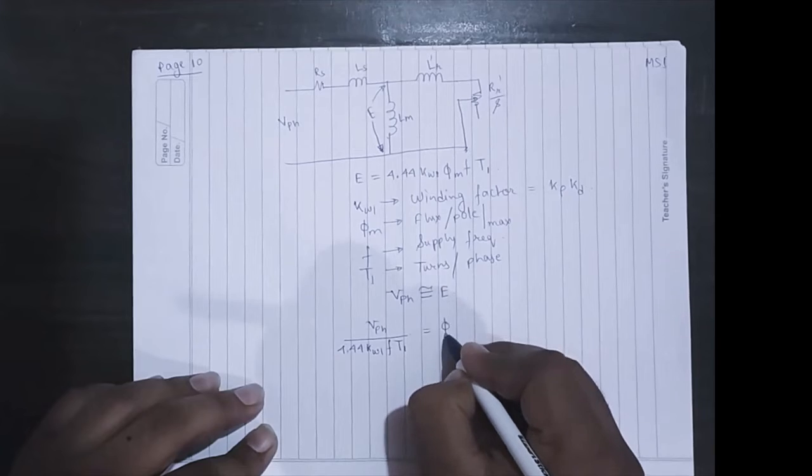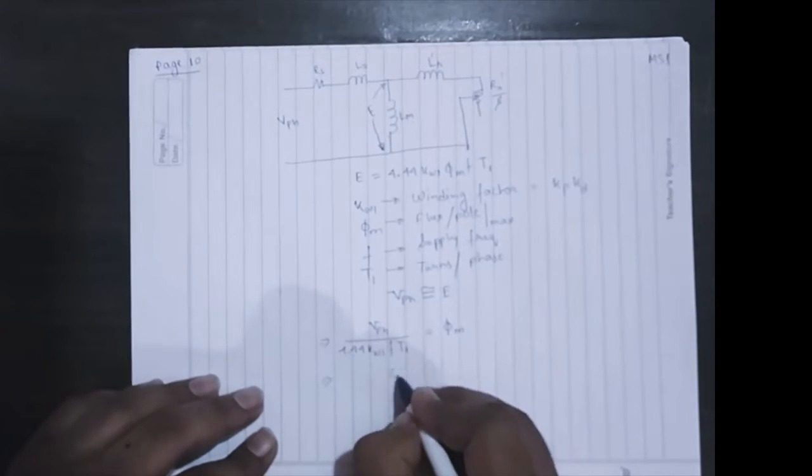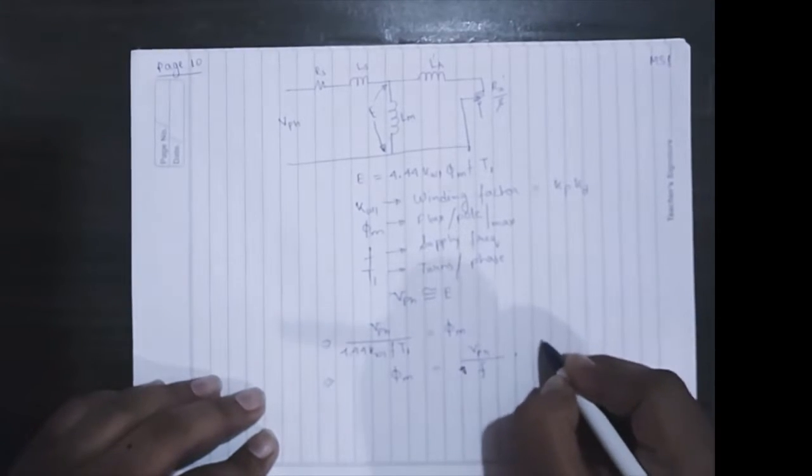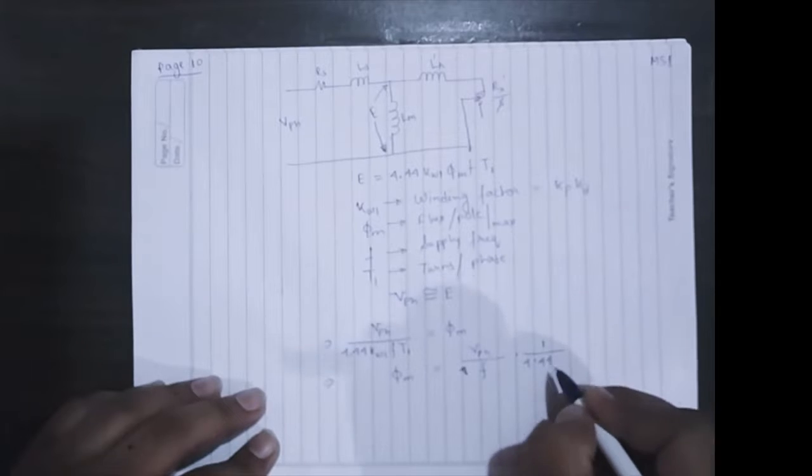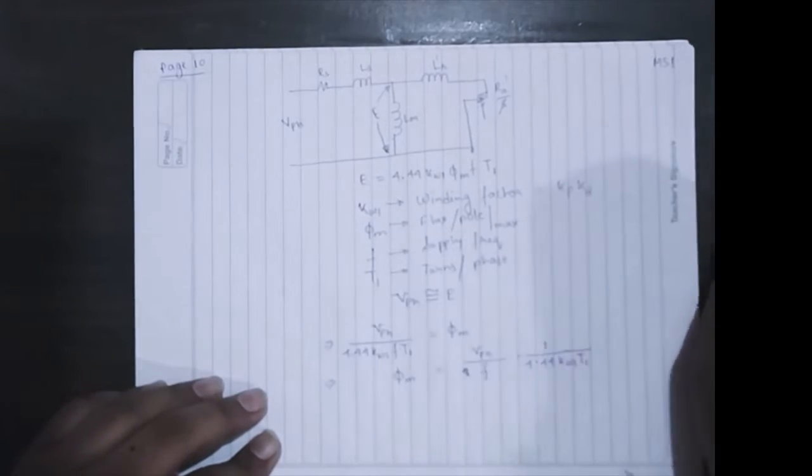V_phase divided by 4.44 k_w1 f T_1 is equal to phi_m. Now this phi_m is equal to V_phase divided by f times all other remaining constants in the above equation.